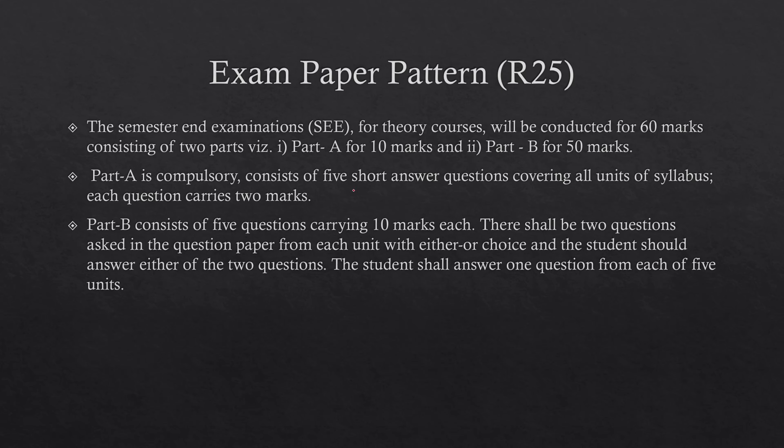Exam paper pattern for R25: Part A will be for 10 marks, Part B for 50 marks. Part A is compulsory with five short answers. You need to write all of those to get 10 marks. Don't ignore Part A. When you write it properly, you will get five to six marks, and it will be useful in getting past marks.